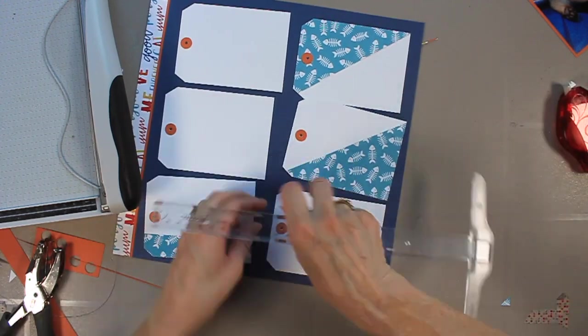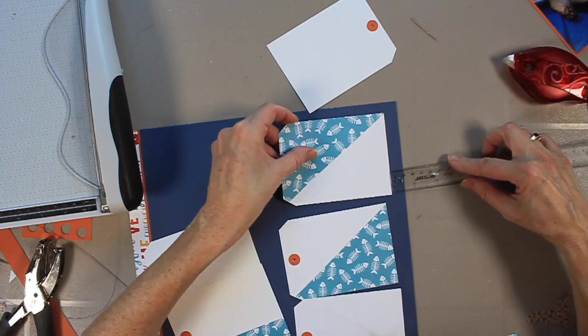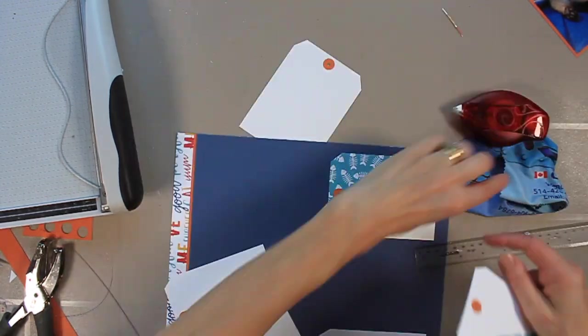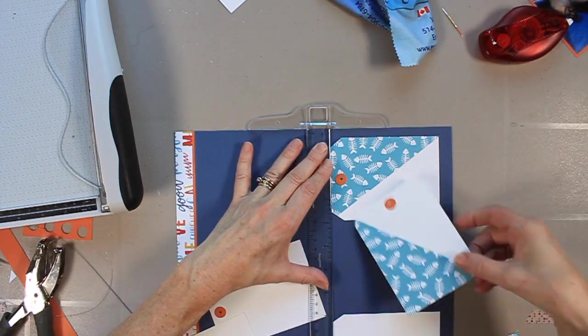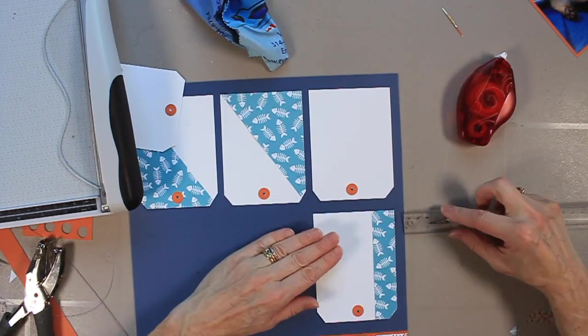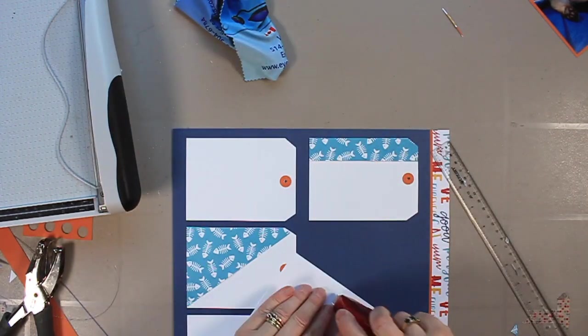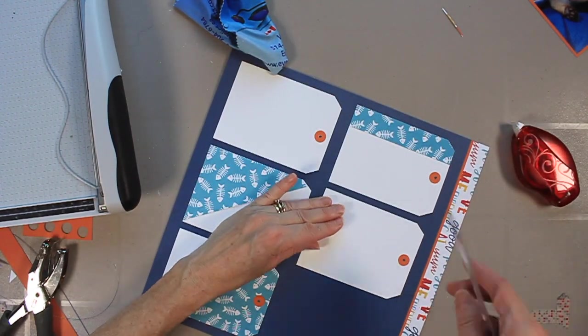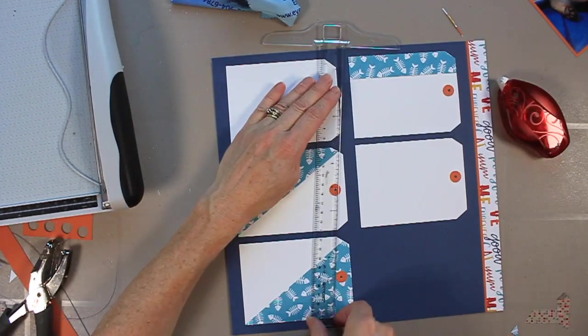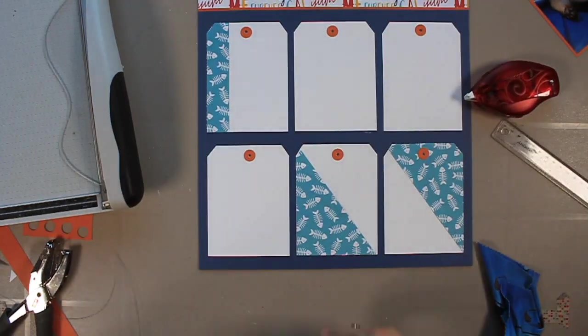So, I'm happy with that, and now what I'm going to do is adhere all of these tags to my page. I find the easiest way to do this is to adhere the one on the bottom left, then on the bottom right, so I make sure those two are of equal distance from the edges, and then I position the middle tag. It's easier for me to make it of equal distance when I do that, and once I have one row done, I use that as a guide to adhere the other row. For me, that's just the easiest way.